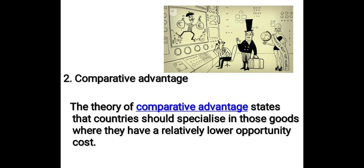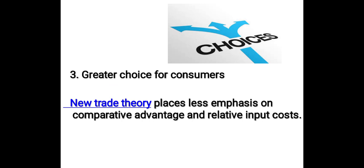Comparative advantage: The theory of comparative advantage states that countries should specialize in those goods where they have a relatively lower opportunity cost. Even if one country can produce two goods at a lower absolute cost, it doesn't mean they should produce everything. India, with lower labor costs, may have a comparative advantage in labor-intensive production — example, call centers and clothing manufacture. Therefore, it would be efficient for India to export these services and goods, while an economy like the United Kingdom may have a comparative advantage in education and video game production. Trade allows countries to specialize and provide greater choice for consumers.